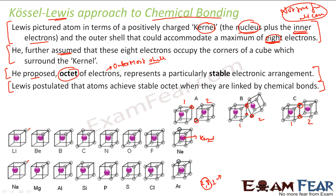This is a very basic approach to chemical bonding and it gives us a fair idea. To summarize: the kernel consists of the nucleus plus inner electrons; the outer shell can have a minimum of one and a maximum of eight electrons; the kernel is in a cube-like structure with eight corners occupied by outermost electrons; and every atom wants to attain stable configuration — the octet — by sharing electrons through a chemical bond.